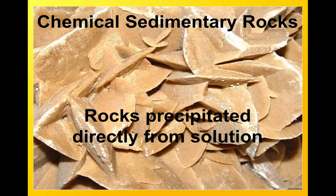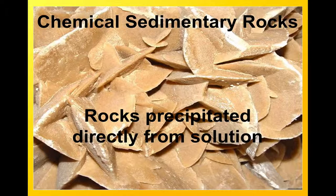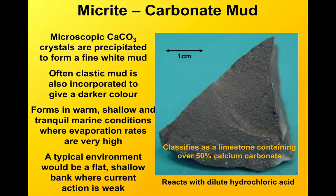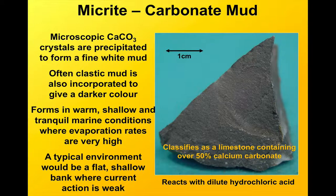The sandstones are dealt with in another video, so we'll move on to the chemical sedimentary rocks. These are rocks that are precipitated directly from solution — the minerals are dissolved in water and the chemical process of precipitation leads to those minerals being deposited on the bottom of the water body. One of the most common of these is a carbonate mud: calcite chemically precipitated, usually out of seawater, at a microscopic scale, to give typically a limestone. In its purest form, limestone is going to be white.